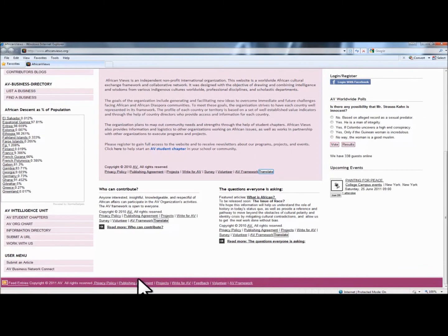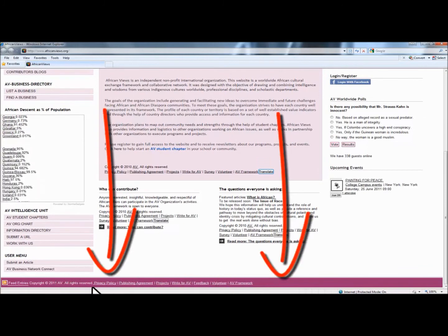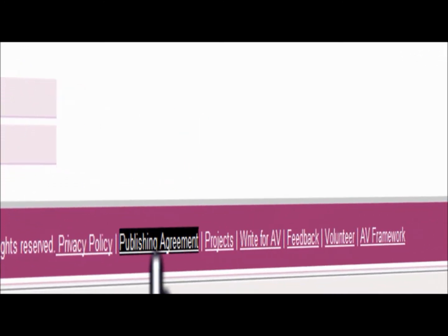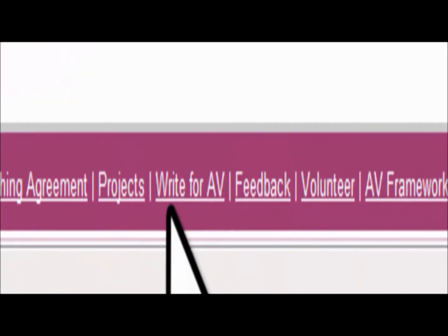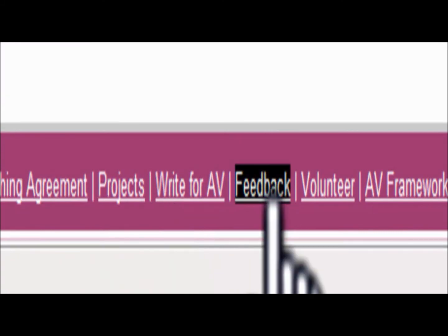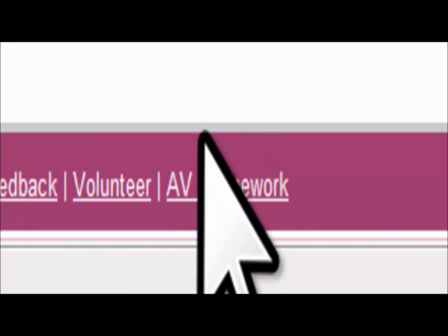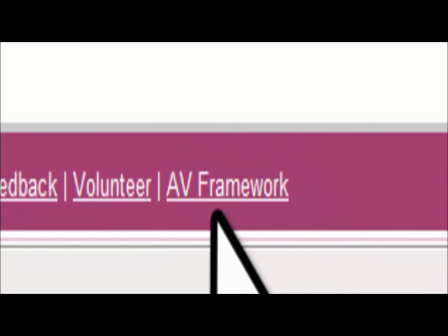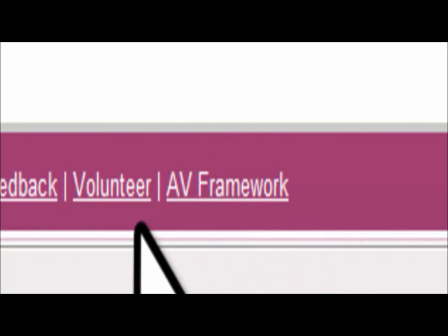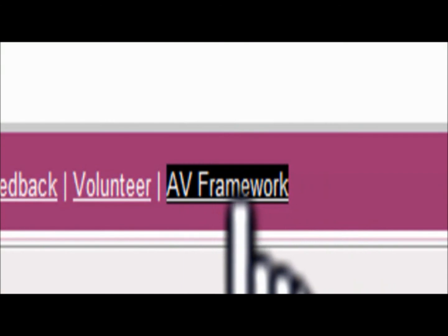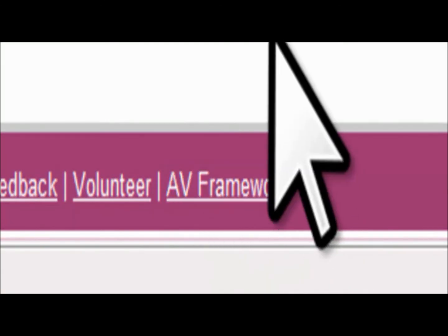The footer section is actually very important. You will see links to some very important documents here, including privacy policy, publishing agreements, projects, how to write for AV, feedback, how to volunteer with us, and more importantly, information about the AV Framework. If you need to know more about any component of the framework, I highly recommend that you check out the AV Framework link here.